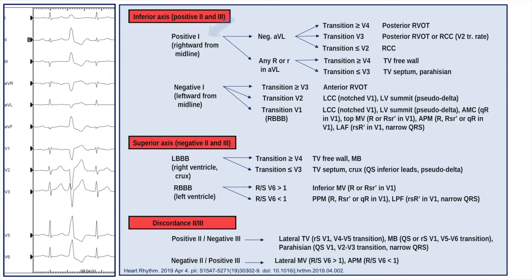In summary, we have a positive lead one in this ECG which shows a rightward from midline structure as the origin of the PVC. The AVL is negative, and based on the transition zone, the PVC could be either in right coronary cusp if the transition is at or earlier than V2, posterior RVOT or right coronary cusp if the transition is at V3. As in our patient, the transition is V3-V4 or at V4 or later, therefore the PVC should be in the posterior RVOT.